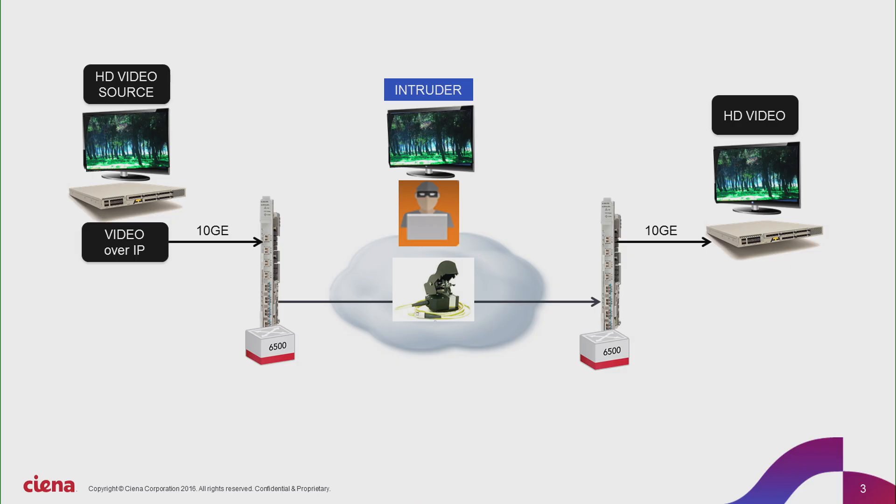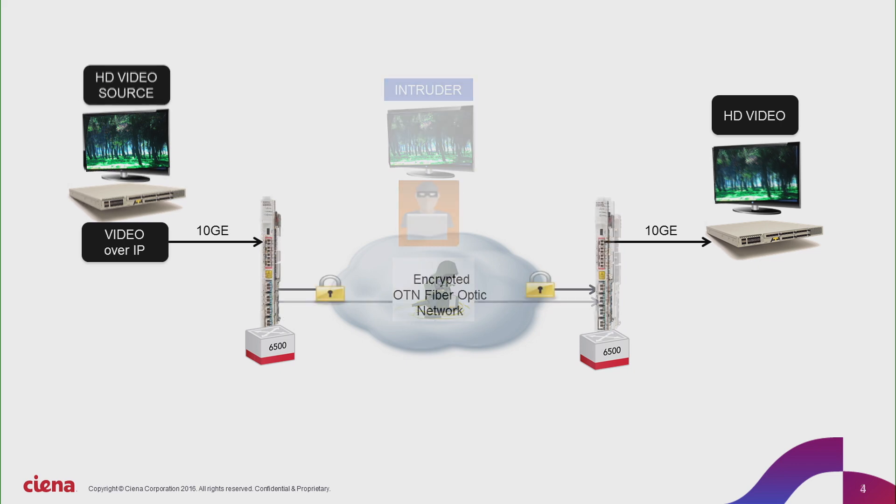What we will now demonstrate is the use of an encryption system to prevent that theft of critical information. We will now reconfigure the system so that instead of having a standard optical network system that is unencrypted, we will reconfigure the network to use an encrypted network.